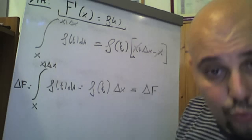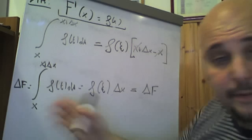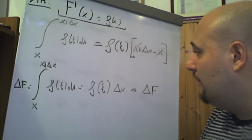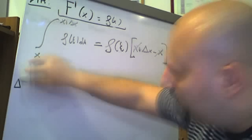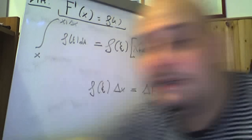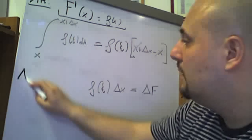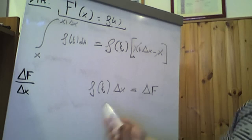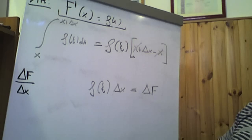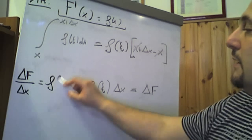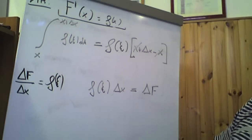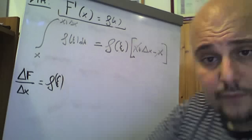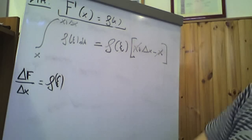ξ evidentemente è un opportuno punto dell'intervallo avente per estremi proprio x e x più Δx. Ora, se adesso dividiamo per Δx, è evidente come ΔF grande su Δx sarà f di ξ: se ΔF grande è f di ξ per Δx, allora ΔF grande su Δx sarà evidentemente f di ξ. Se andiamo a fare il limite per Δx tendere a zero, il punto ξ tenderà evidentemente al punto x.